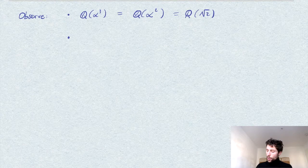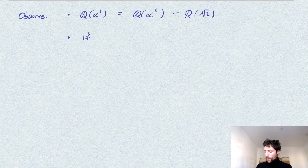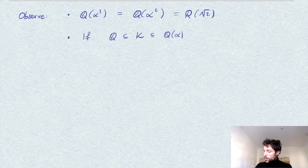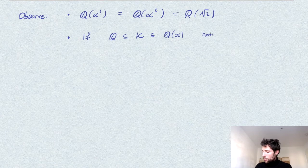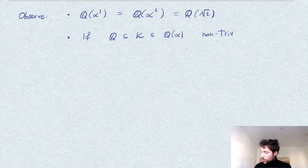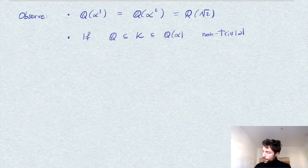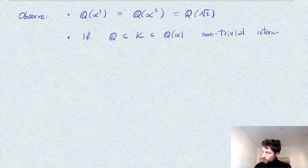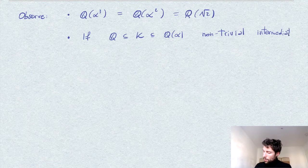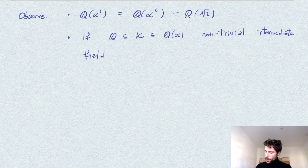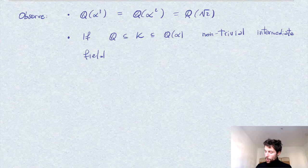Next, from the tower law and the fact that the degree must divide 4, if K is a non-trivial intermediate field—meaning it's not Q or Q(α)—then it must have degree 2, since it has to divide 4 and cannot be 4 or 1.